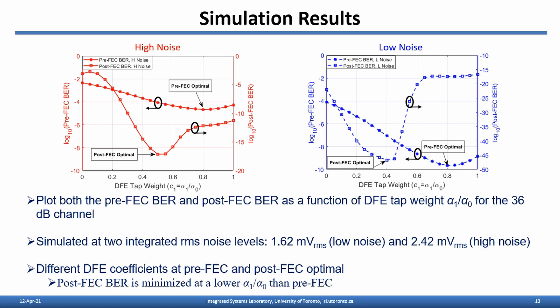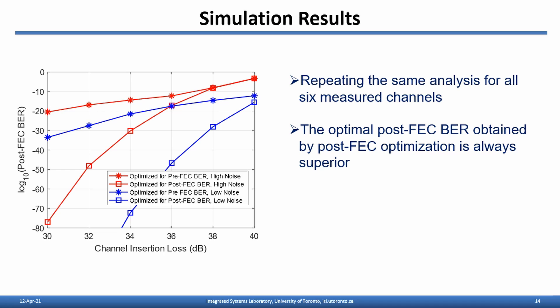We repeat the same analysis for all six measured channels and plot the post-FEC BER optimized by pre-FEC and post-FEC, using blue and red curves to represent simulation results at the two different noise levels. As the pre-FEC BER does not have the sensitivity to capture DFE propagation at very low bit error rate levels, it is not surprising that the optimal post-FEC BER obtained by post-FEC optimization is always superior. For example, in the high-noise case for a 34 dB loss channel, the post-FEC BER degrades from 10⁻³⁰ to 10⁻¹⁴ when the equalizer is optimized for pre-FEC BER.